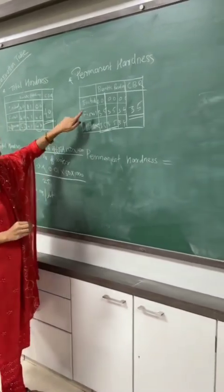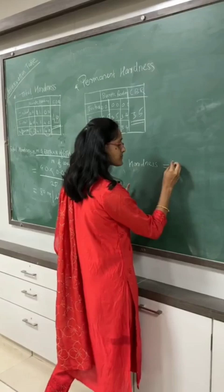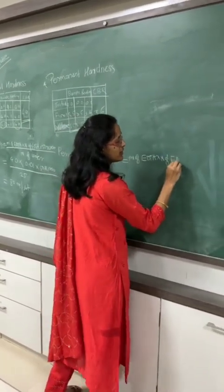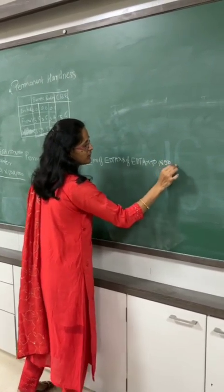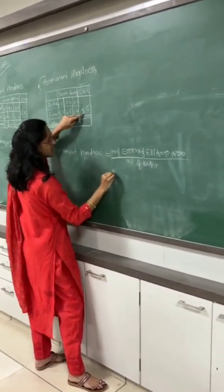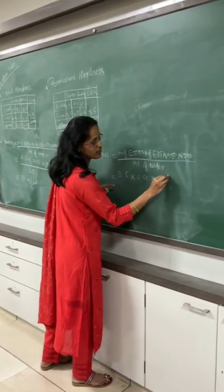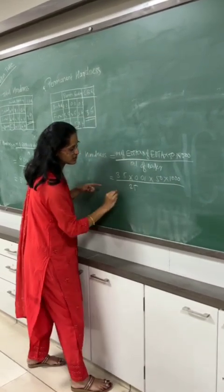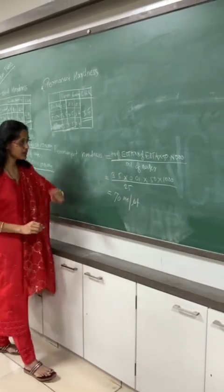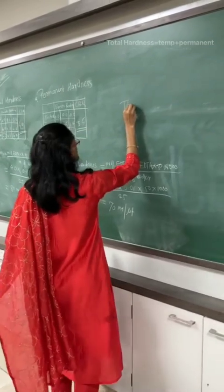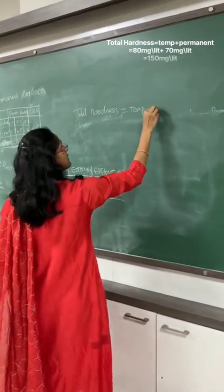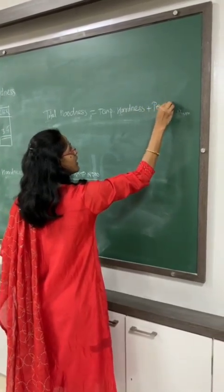Now we will calculate the permanent hardness. The reading for permanent hardness is 3.5. Using the same formula: ml of EDTA used × normality of EDTA × 50 × 1000 ÷ ml of water sample used. ml of water sample is again 25 ml. So: 3.5 × 0.01 × 50 × 1000 ÷ 25 = 70 mg per litre. Now, total hardness is nothing but temporary hardness plus permanent hardness. So temporary hardness = total hardness − permanent hardness = 80 − 70 = 10 mg/L.